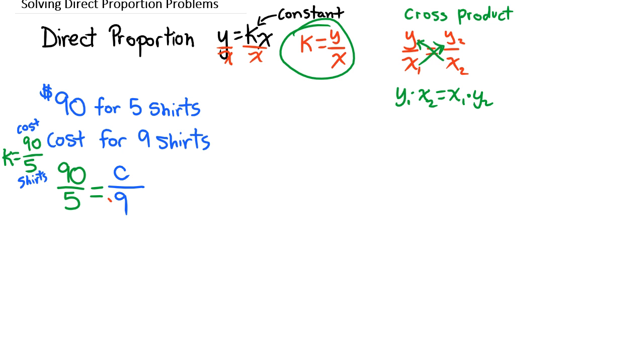Now then what we can do is we can cross multiply, and we know that the cross products are equal to each other. So we can say 90 times 9 is, 9 times 9 is 81, add a 0, equals 5 times c, which is just 5c. We can divide both sides by 5, and 810 divided by 5 is $162.